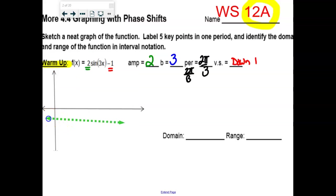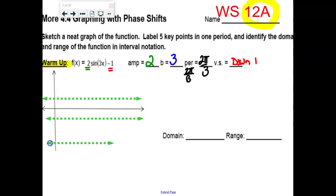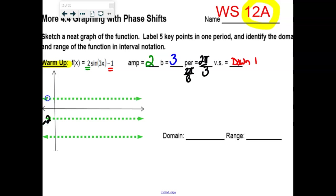I'm going to pretend that this line is at negative 1 — I'll label it in a minute. Your amplitude is 2, so up 2 from the midline and down 2. The labels are the important part. So this is at negative 2 at the bottom and at positive 1 at the top — midline at negative 1, max at 1, min at negative 3.